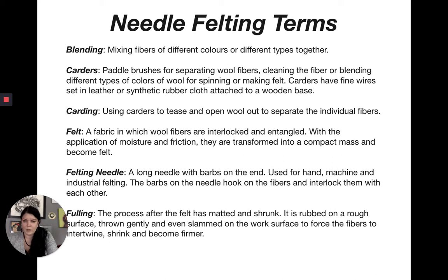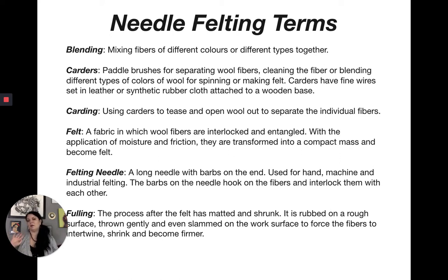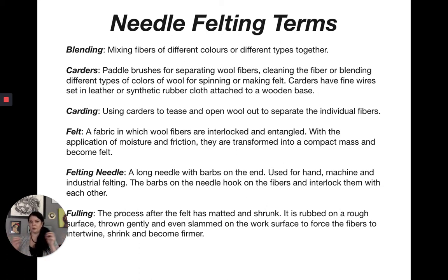Blending is mixing fibers of different colors — just like blending paint. You can take red and yellow, layer them, pull them through each other, and create something that looks more like orange. It's kind of like Seurat's pointillism — put orange and red next to each other and your eye makes it look more of a red-orange. Carders are the paddle brush things with spikes used to brush fleece. A felting needle is a long needle with barbs used for hand, machine, or industrial felting — the barbs hook into fibers and interlock them.